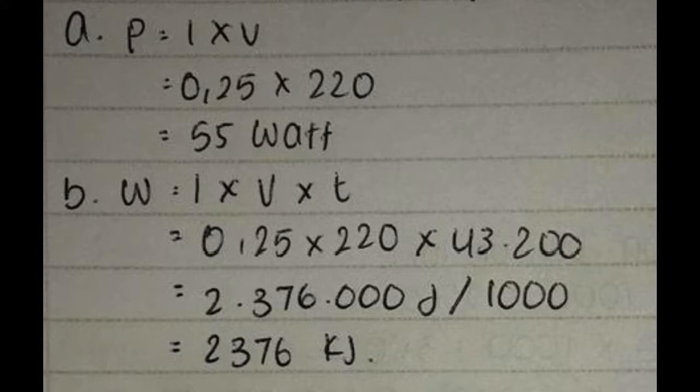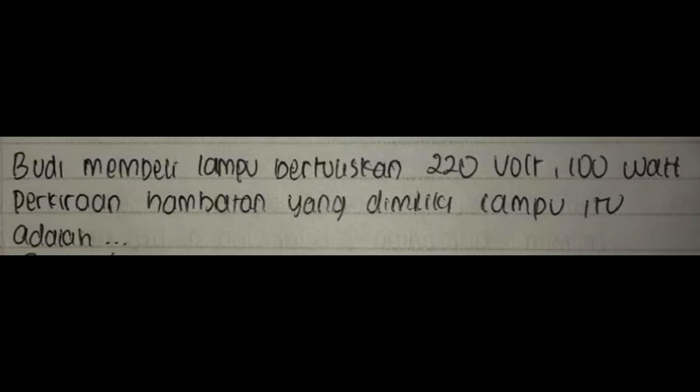A, P sama dengan I dikali V sama dengan 0,25 dikali 220 sama dengan 55 watt. B, W sama dengan I dikali V dikali T sama dengan 0,25 dikali 220 dikali 43.200 sama dengan 2.376.000 Joule per 1000 sama dengan 2.376 kJoule.